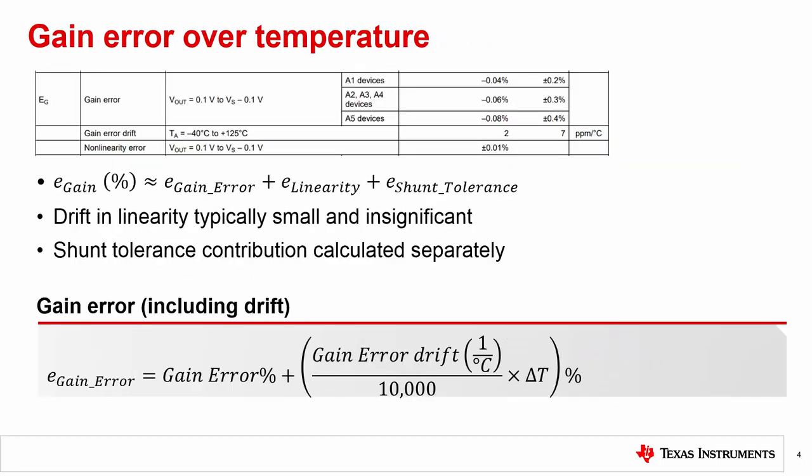So within the RSS formula, it's possible to generically lump all terms into two categories. One category is gain error, and the other is voltage offset. The gain error subset includes specifications for gain error, nonlinearity, and shunt tolerance. Typically, the nonlinearity error is quite small, and the magnitude it drifts is even more negligible. And therefore, it is not typically provided in the datasheet. As for the shunt tolerance, this specification is typically found on a separate datasheet, as only a few current shunt monitors include an internal shunt.